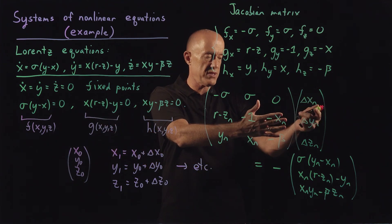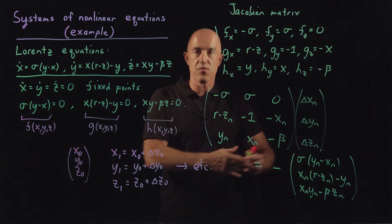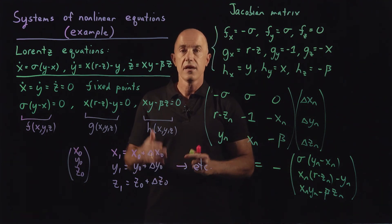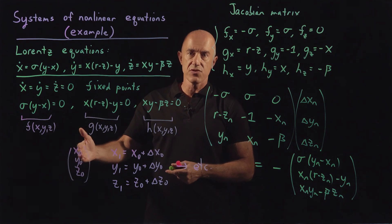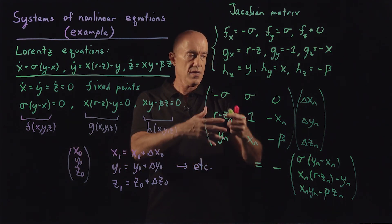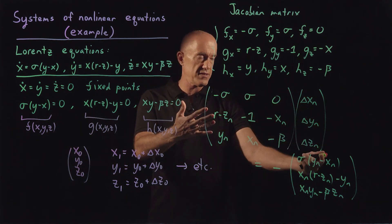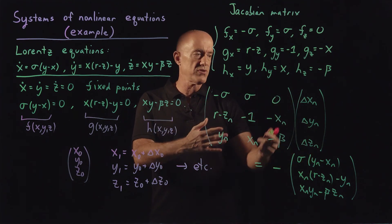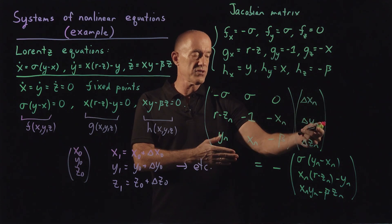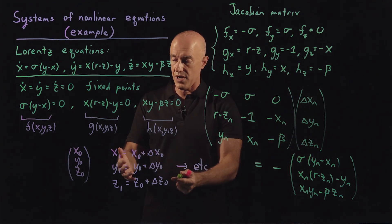And then this is the right-hand side of the equation. So to solve, we start off with some initial guess: x_0, y_0, and z_0. We plug into this matrix equation. Solve the matrix equation. Find delta x_0, delta y_0, and delta z_0.